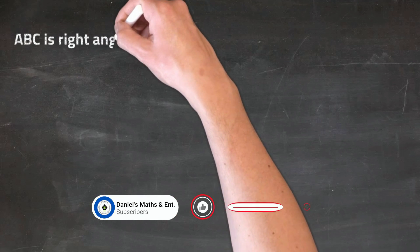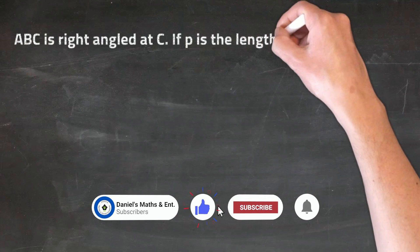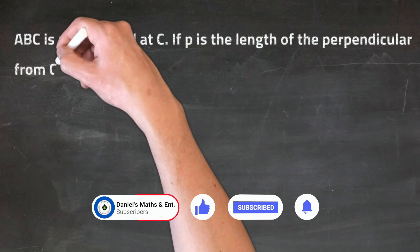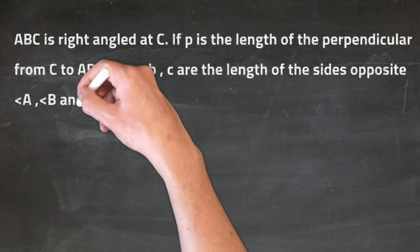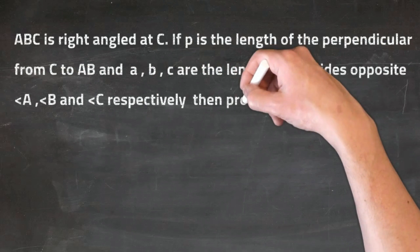ABC is right angled at C. If P is the length of the perpendicular from C to AB, and A, B, C are the length of the sides opposite angle A, angle B and angle C respectively, then prove that